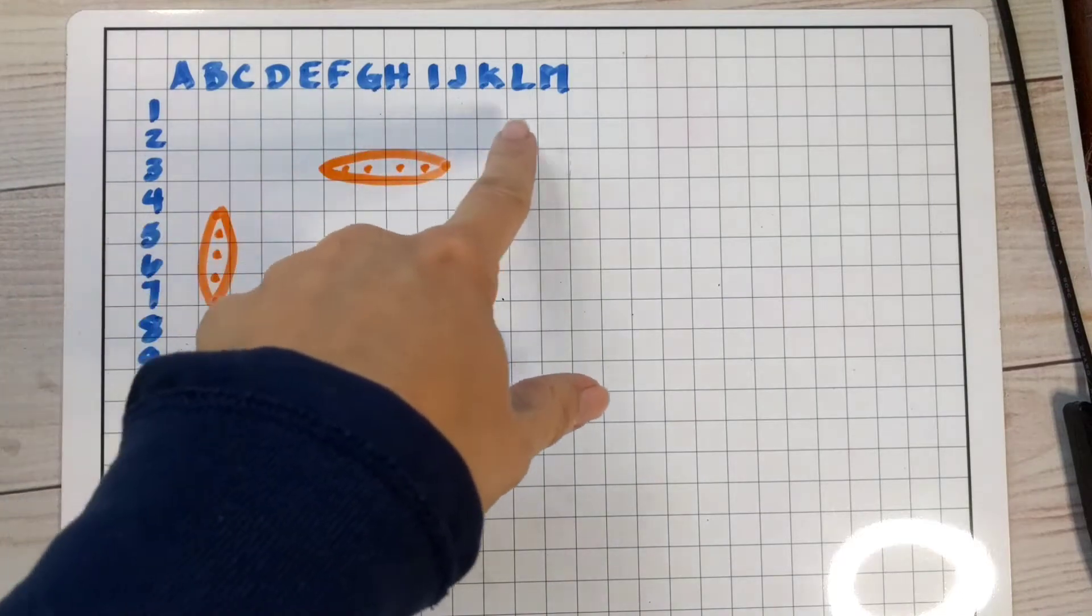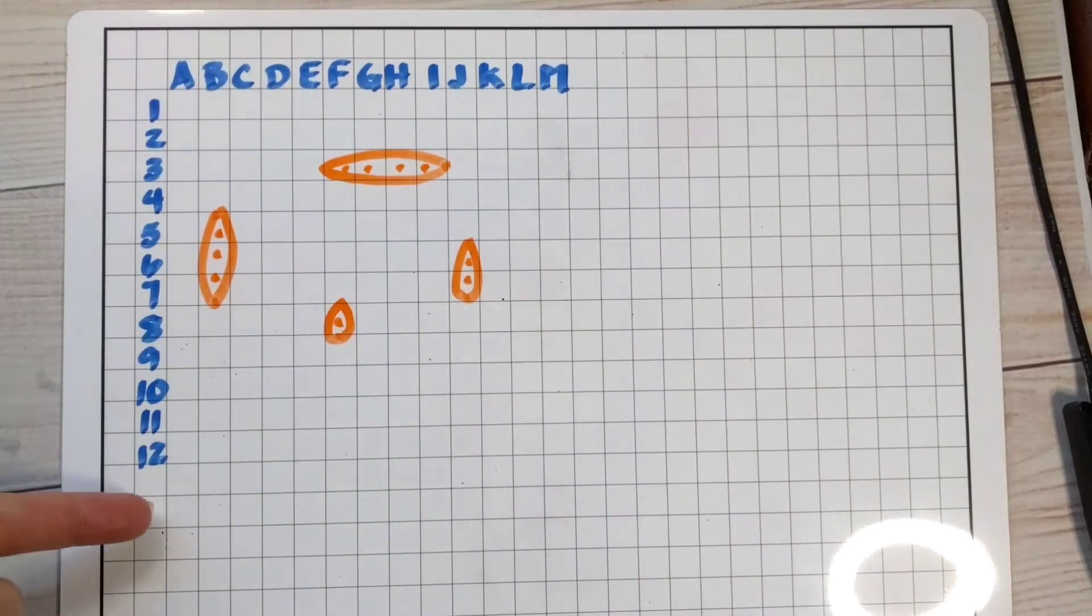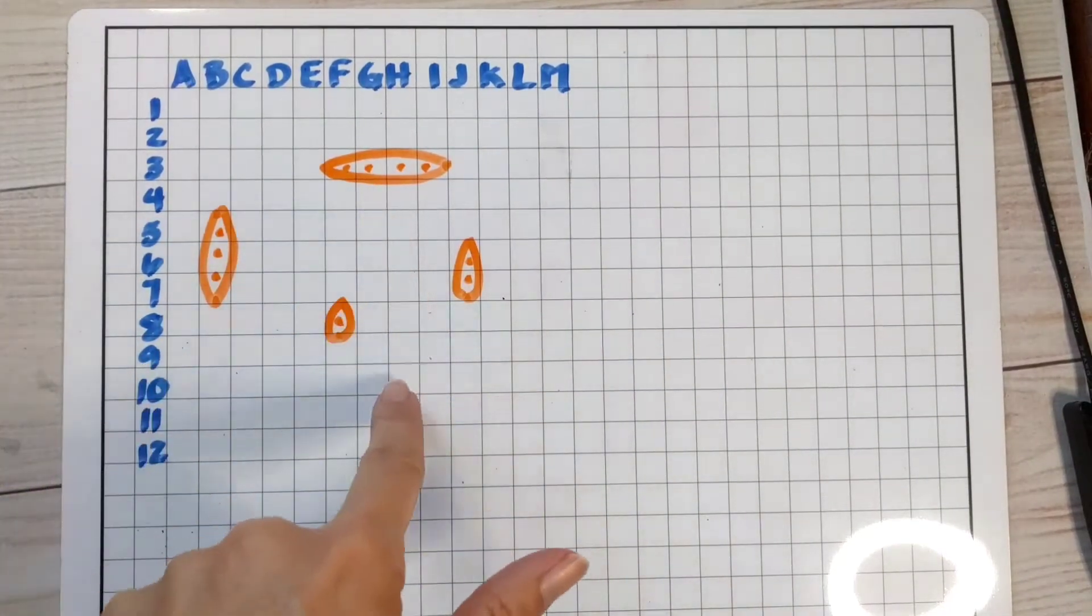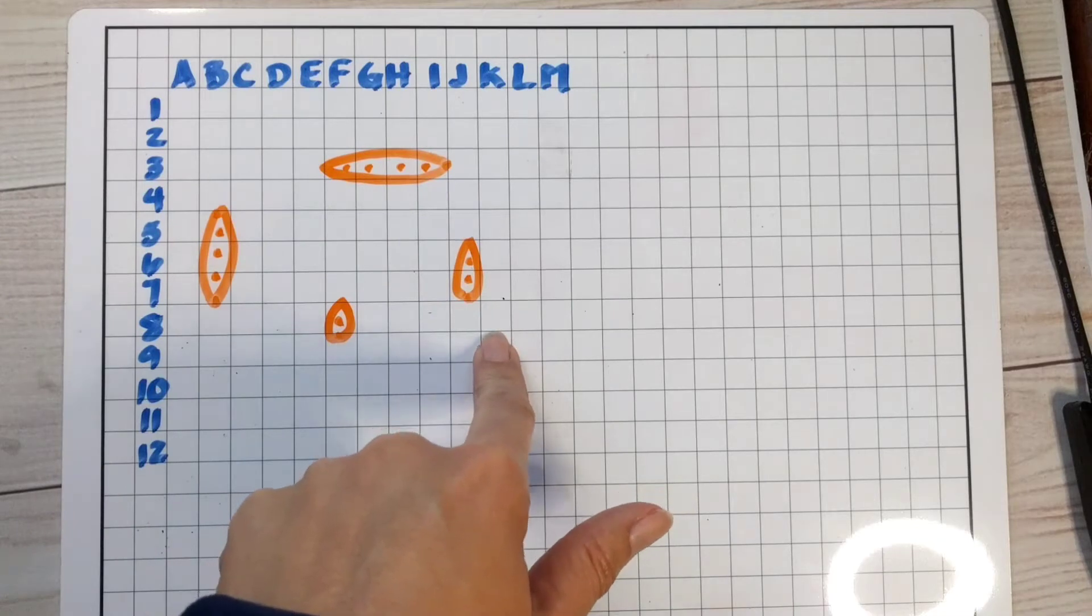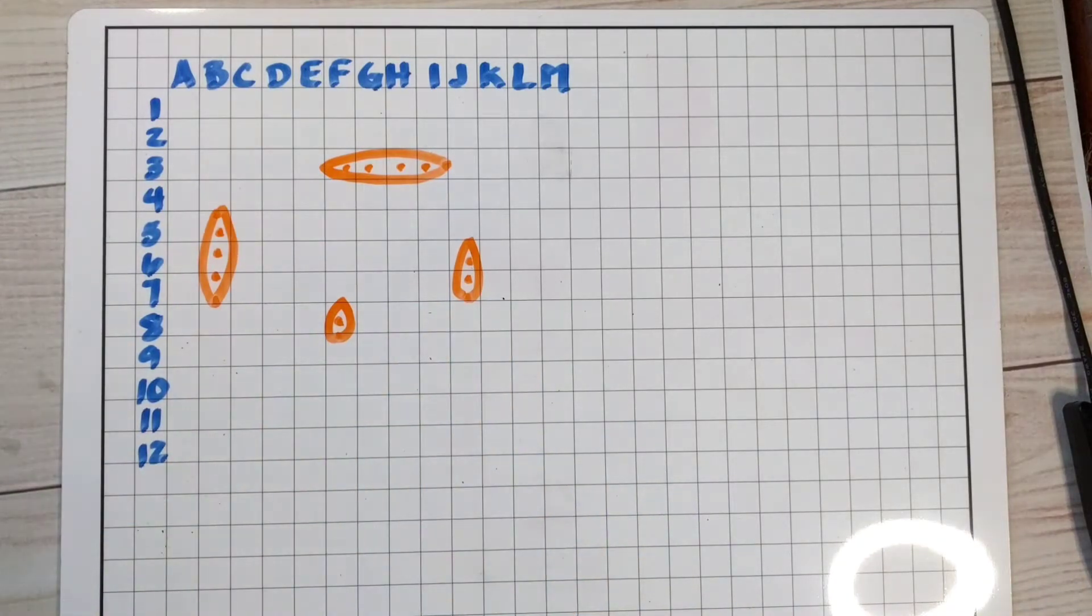It has the alphabet across the top, numbers down the side, and then I've placed my four ships so that my opponent can't see them. And your opponent, while playing the game, will call out coordinates.